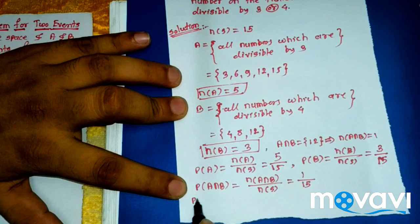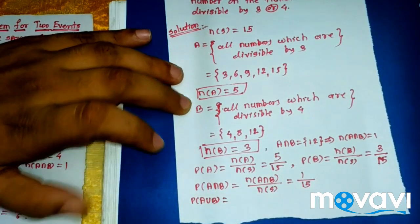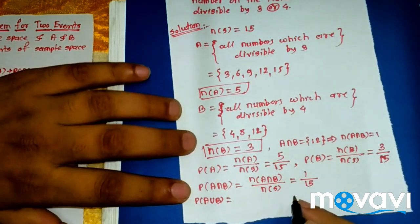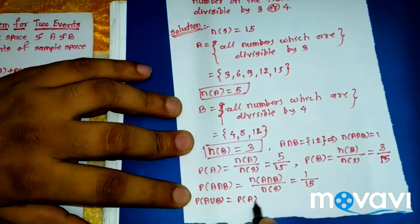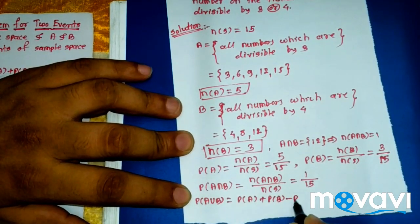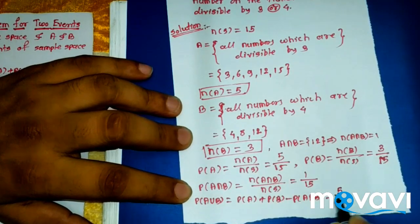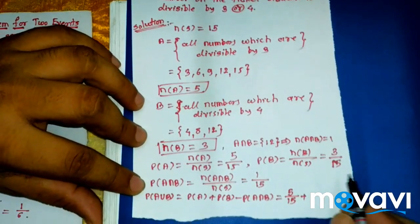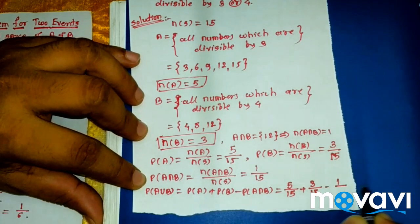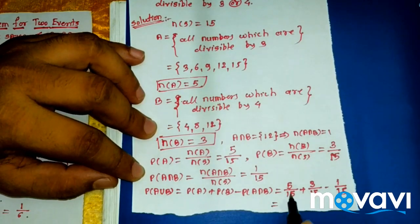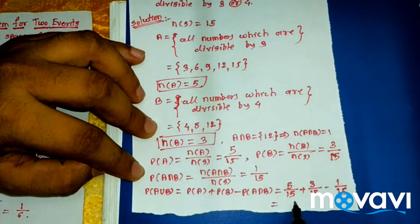By the addition theorem, P(A union B) = P(A) + P(B) − P(A intersection B) = 5/15 + 3/15 − 1/15. The final answer is (5 + 3 − 1)/15 = 7/15.